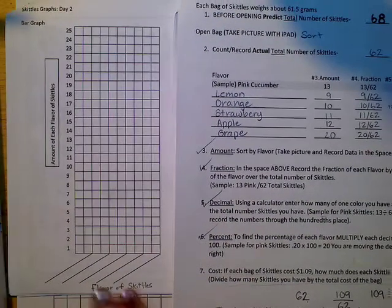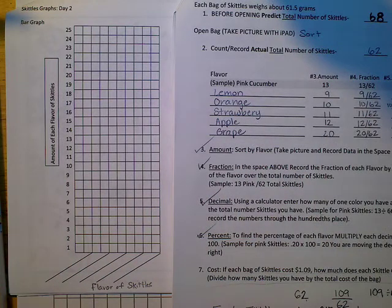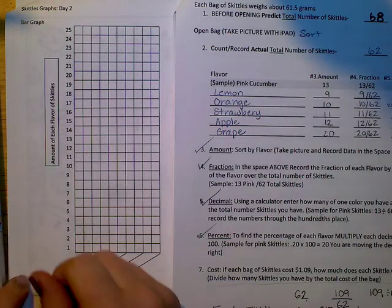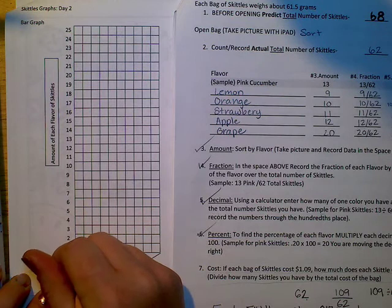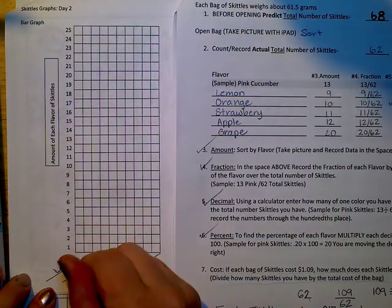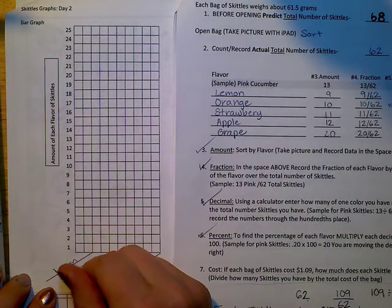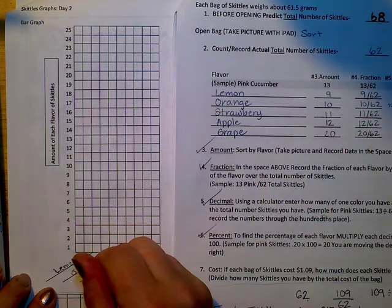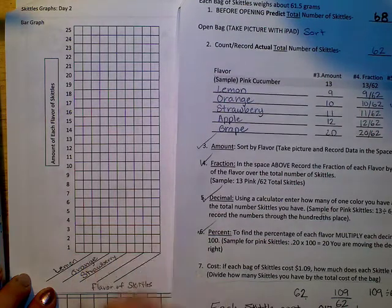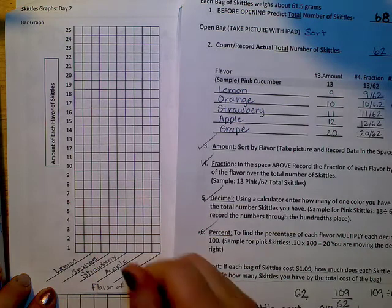And on here, I'm going to put the flavors on these lines. So I can go in order, I don't have to, but because I did yesterday, I'm going to just do the same thing. So the first one is lemon, orange, strawberry, apple, and grape.